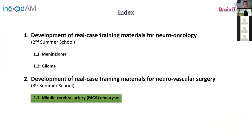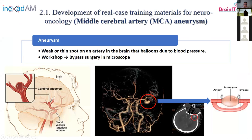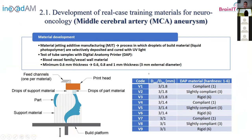The last case was a middle cerebral artery aneurysm — a shorter case. An aneurysm is like a weakness point of the blood vessels, and the typical intervention is to put a bypass and add clips so that the flow goes through the bypass. For this case, we used material jetting additive manufacturing — specifically the Digital Anatomy printer, a 3D printer specialized for anatomy cases. From the available materials, we used the blood vessel family, specifically the vessel wall material.